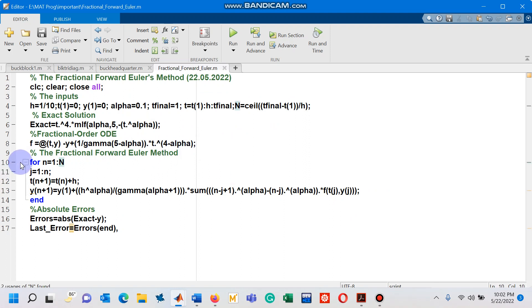From line number 10 till line number 14 is what you saw, the fractional forward Euler's method given by equations 3.13 and 3.14.